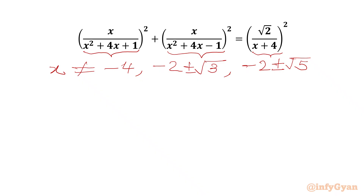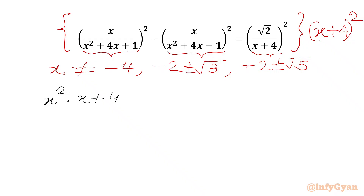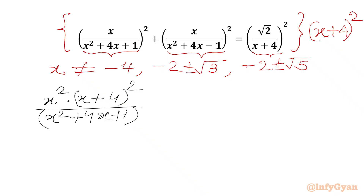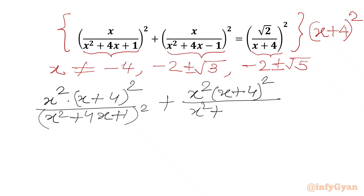Now we are going to multiply our equation by (x + 4)² on both sides. On the LHS we will be writing x² times (x + 4)² over (x² + 4x + 1)² plus x² times (x + 4)². And the RHS will become (√2)², so we can write 2 only.